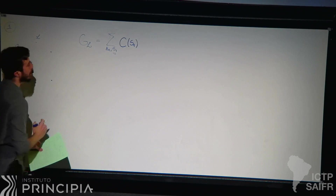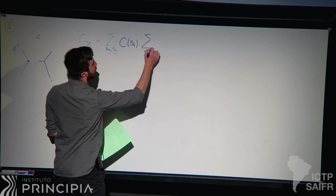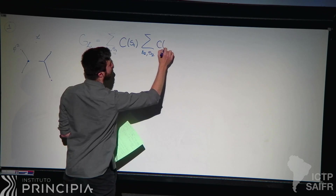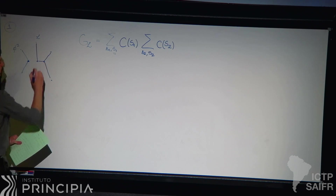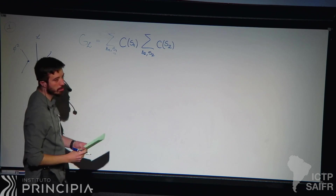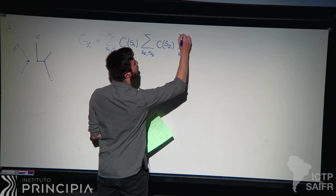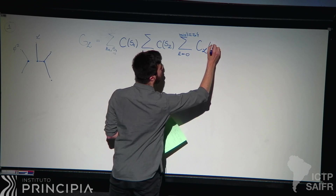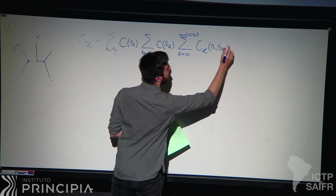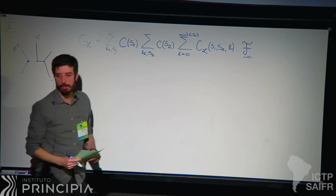Here we have a three-point function between two protected operators and this spinning operator flowing on this channel. We do the same on the opposite side — a sum over all dimensions and spins that can be exchanged. Then we have a three-point function between two spinning operators and the Lagrangian. When we have three-point functions of two spinning operators and a scalar, we also have several conformal tensor structures that are invariant under conformal symmetry, and we sum over all of them, each with its own structure constant.